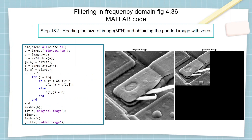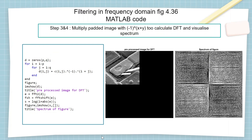In the MATLAB implementation, in step 1 we read the image as a matrix into the MATLAB workspace and convert it into a double array. Then we obtain the padding parameters 2m and 2n assigned to p and q. A double for-loop pads zeros to the image to form the padded image. In step 3 we multiply the padded image with (-1)^(x+y) to center its transform and obtain the pre-processed image.